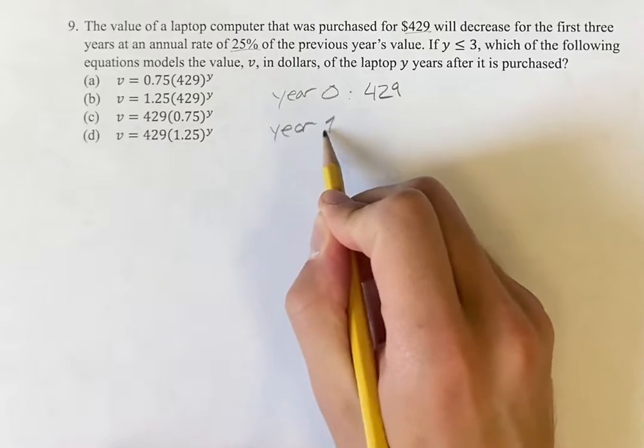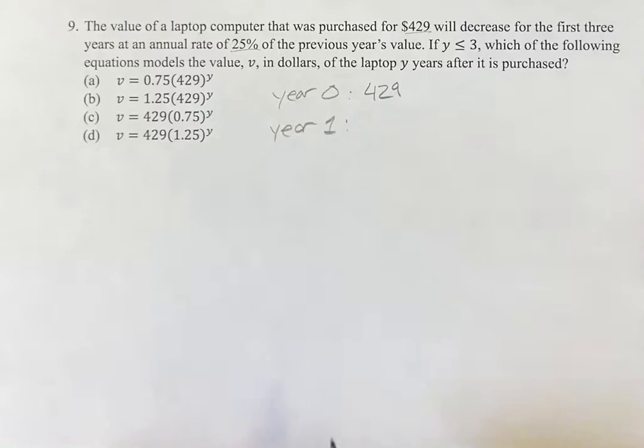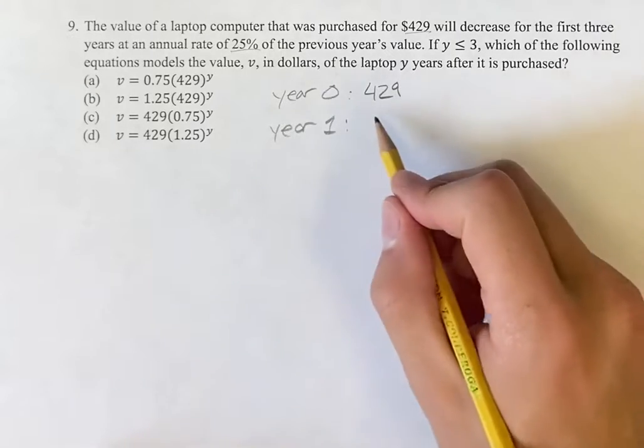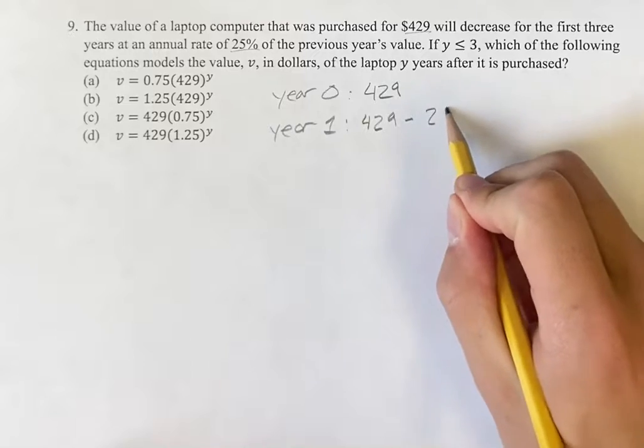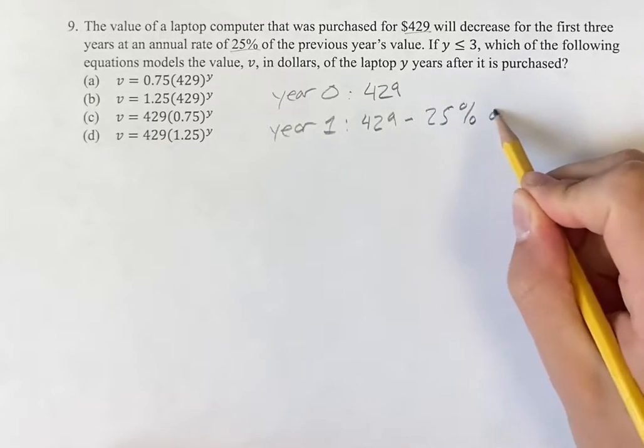And then after one year, it's going to decrease by 25%. Well, what does that mean? Well, we're going to have $429 and it's going to decrease by 25% of $429.